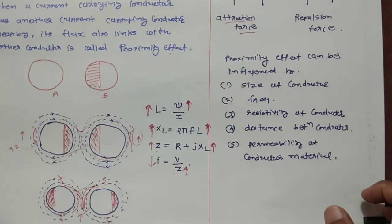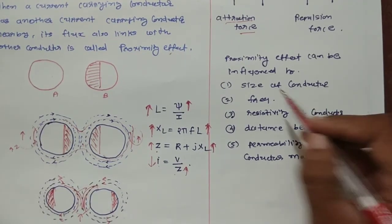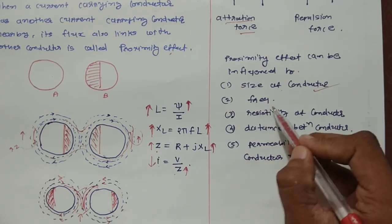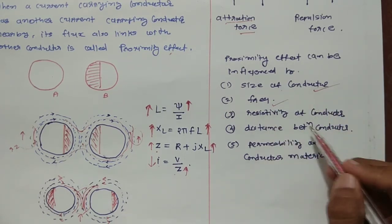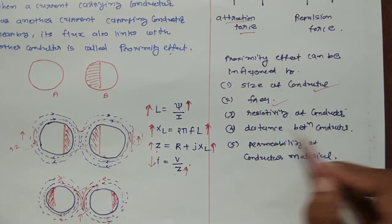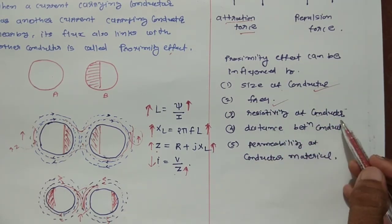Proximity effect can be influenced by the following factors: size of the conductor, frequency, resistivity of the conductor, and distance between the two conductors.